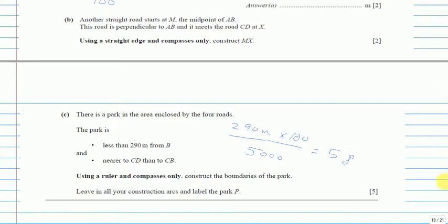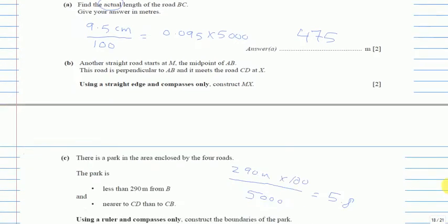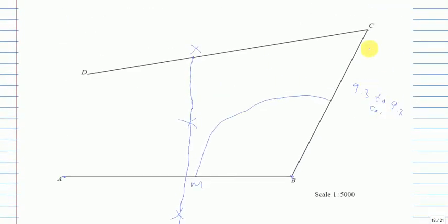Open your compass to 5.8 centimeters, place one end on B, and mark the arc — this represents the region less than 290 meters from B on paper. The second condition is that the park is nearer to CD than to CB. So we need to divide the region between CD and CB, meaning we draw the angle bisector of the angle at C.